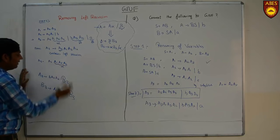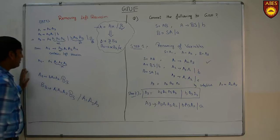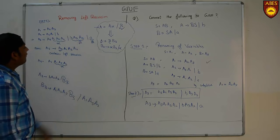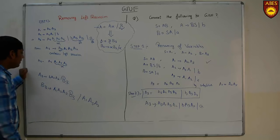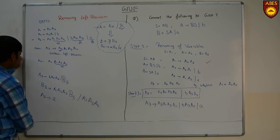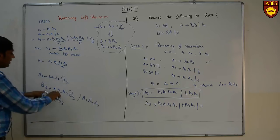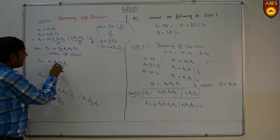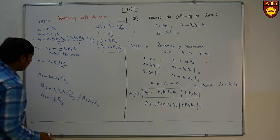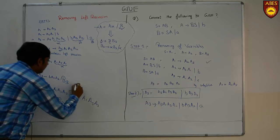Alpha is A1 A3 A2. The next variable beta is A, substituting A. With the new variable B3, B3 is forming A1 A3 A2 B3 and alpha is A1 A3 A2. By using this equation we have converted or removed the left recursion of A3.